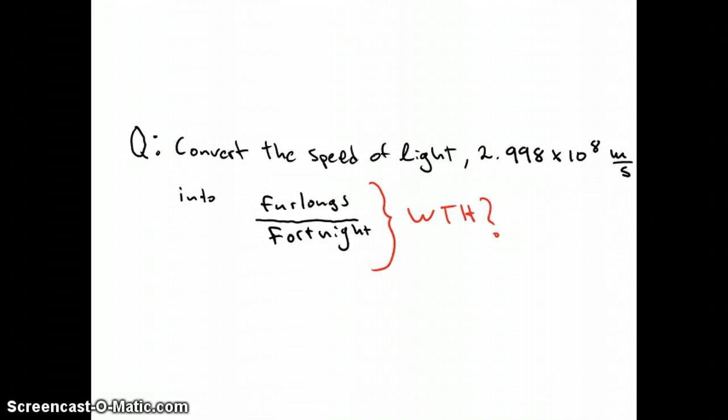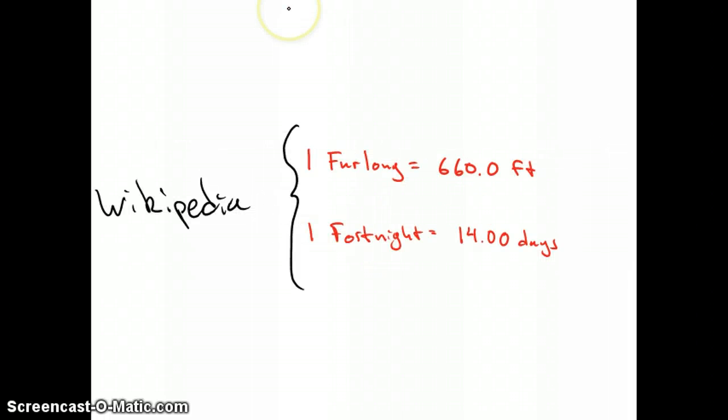You're probably asking yourself what the heck a furlong or a fortnight is. Don't worry, we'll ask Wikipedia. According to Wikipedia, a furlong is a unit of length equivalent to 660 feet, a fortnight is a unit of time equivalent to 14 days.